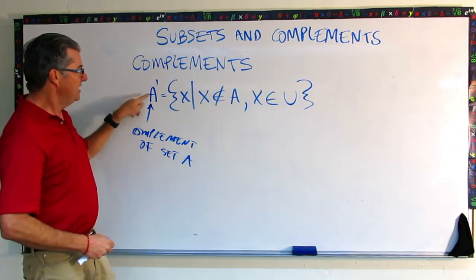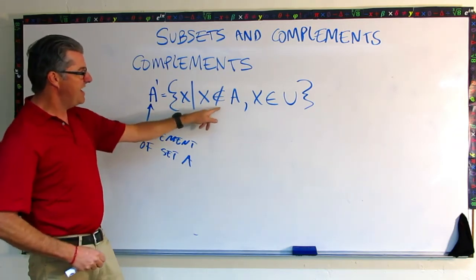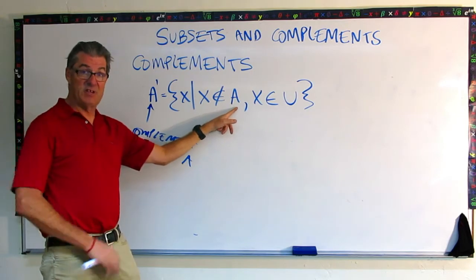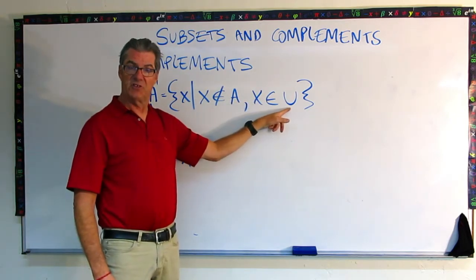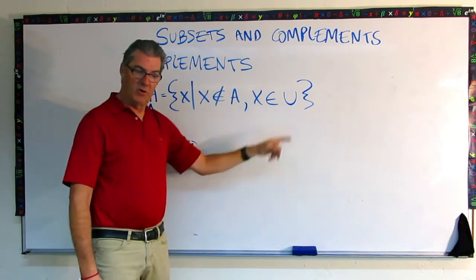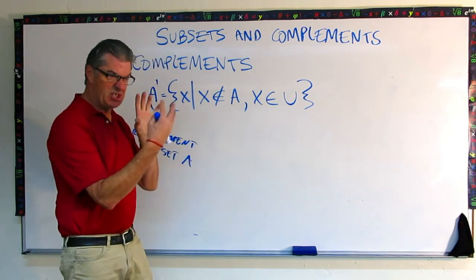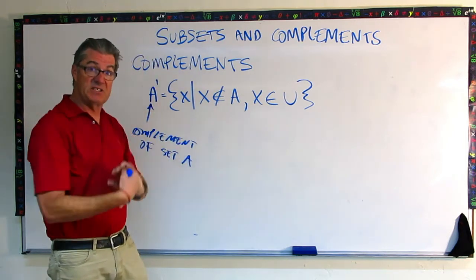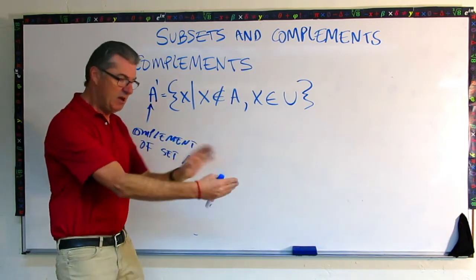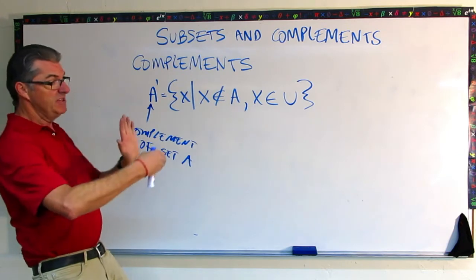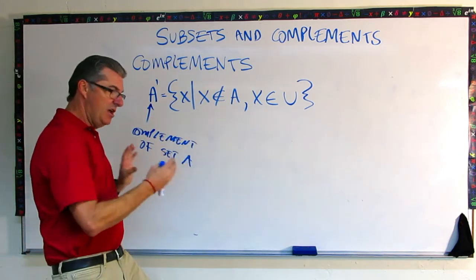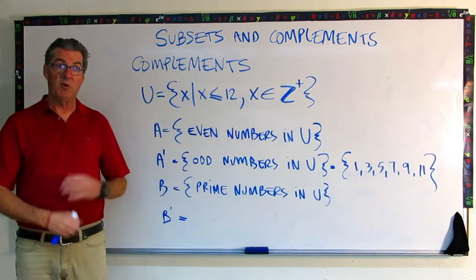Again, A prime, it's all x such that x is not in A. So that's the other set, but x is in the universal set. So we have some universal set with a bunch of stuff in it. Then we've defined a subset of that universal set with a few less things in it. A prime is all the other things in the universal set that aren't in A.